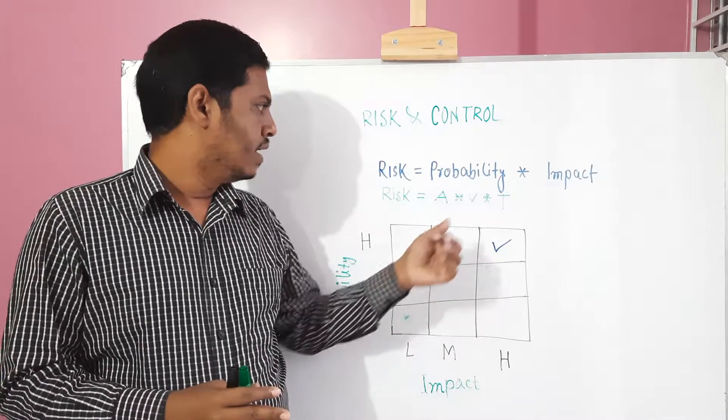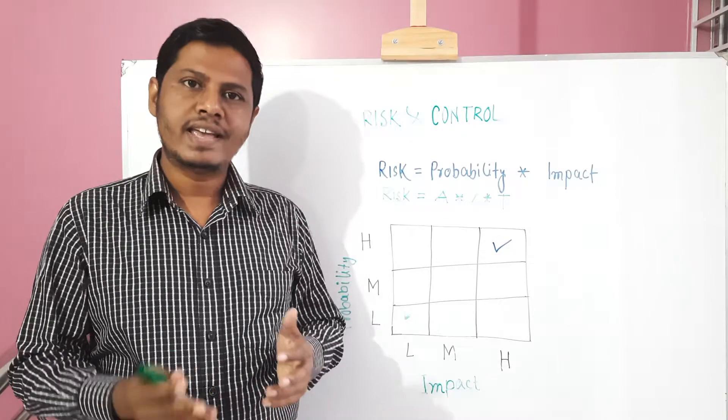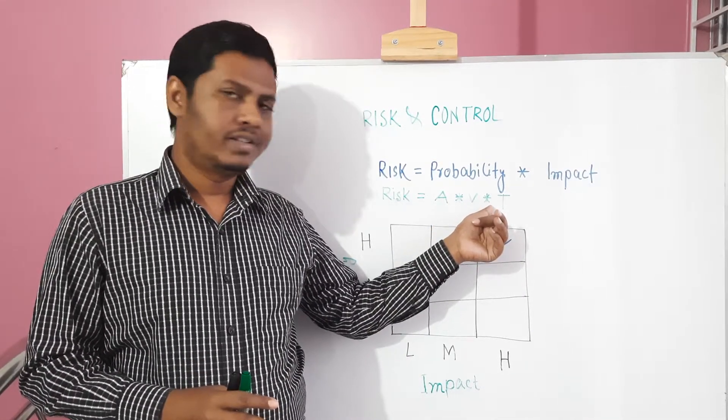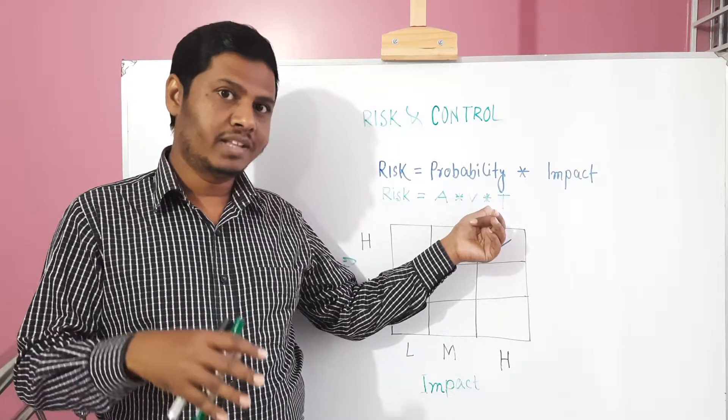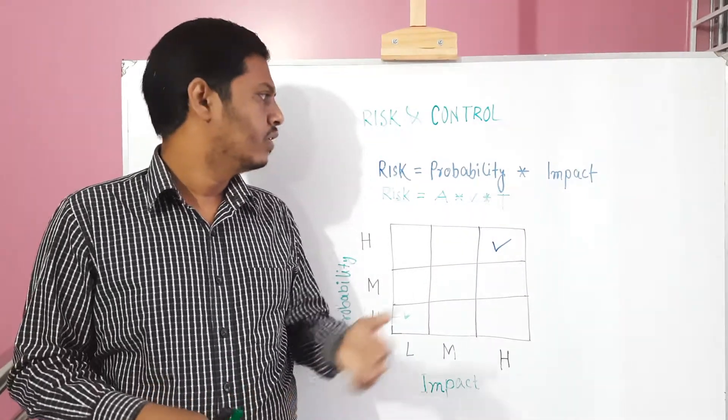If we see an example for vulnerability: weak coding. Weak coding is an example of vulnerability. And threat, that means that exploits the vulnerability. SQL injection is an example of threat.